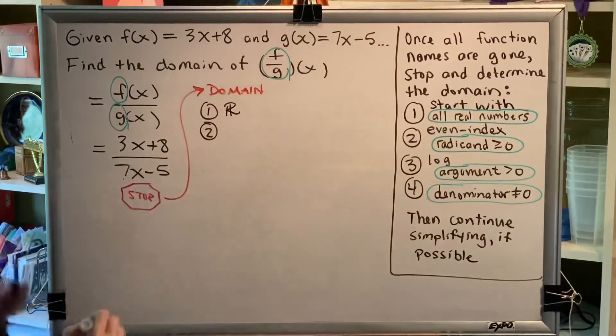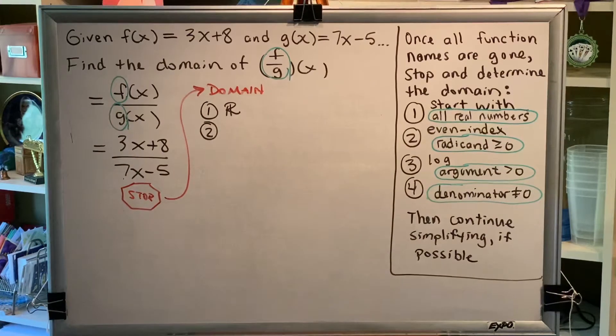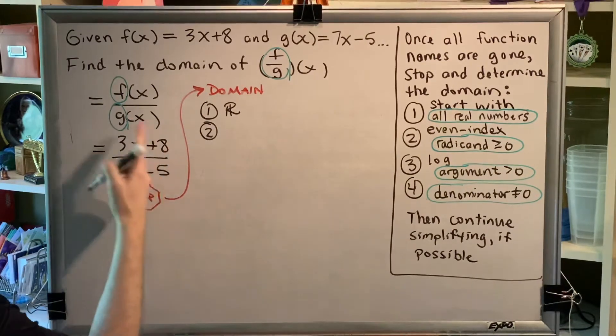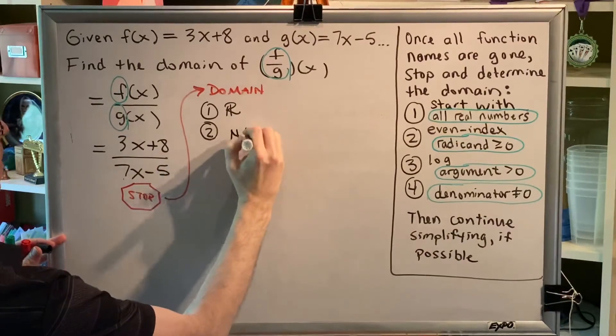Step two, even index radicands greater than or equal to zero. There are no even index radicands in our function, so this step is not applicable.